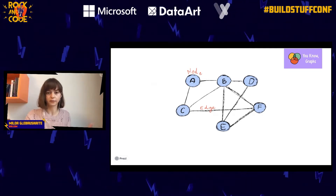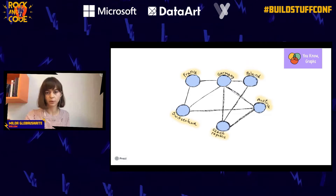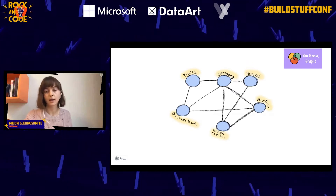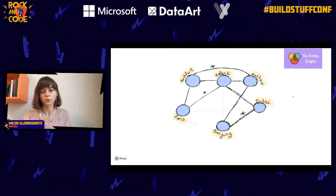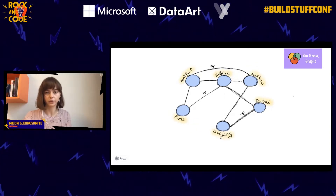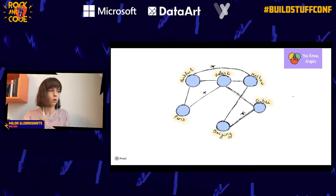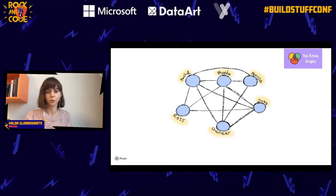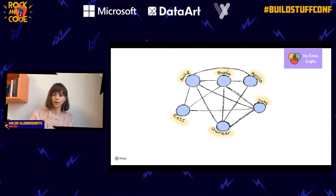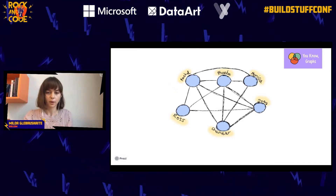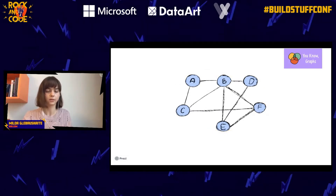For example, this graph could represent some European countries that share a border — France is bordered with Germany, that's why they have a line connecting them. It could represent a flight network: airports that have direct flights to each other. Or this could represent TV show Friends characters who kissed each other on screen.